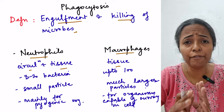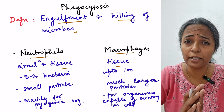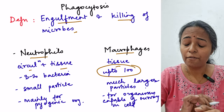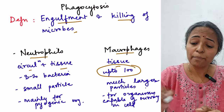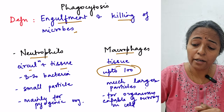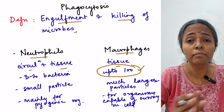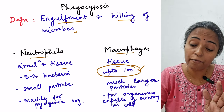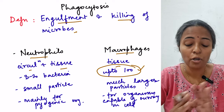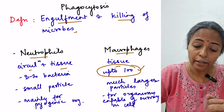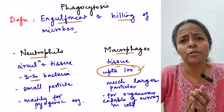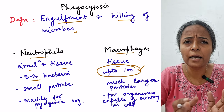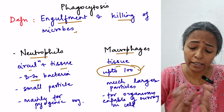Macrophages are very efficient as phagocytes because they can phagocytose approximately 100 particles and still survive for years after that. On the other hand, neutrophils can phagocytose only 3 to 20 bacteria and after that they die.